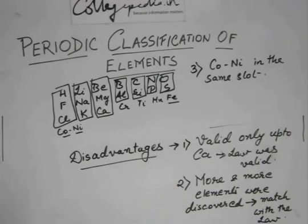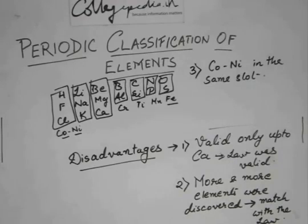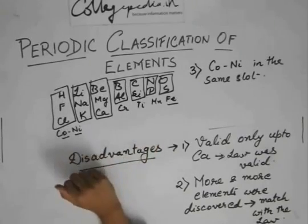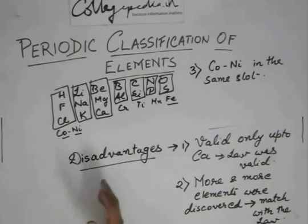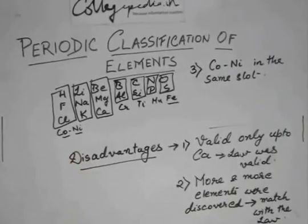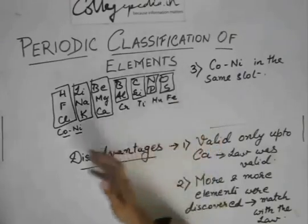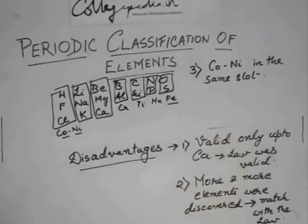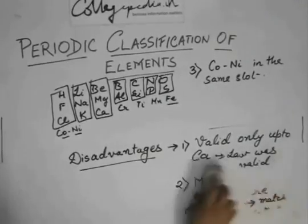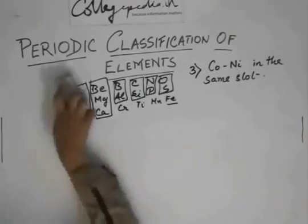So there are three main disadvantages. One was that it was valid only till calcium. And the second was that as more and more elements were discovered, they did not match with Newland's law of octaves. And the third disadvantage was that copper and nickel were placed in the same slot - and there are other examples also - they were placed in the same slot, but they did not match with the other group members, rather the metal or the element with whom the properties of these elements match were placed far away from them. So Newland could not actually try to make a perfect periodic table, but it was another very good attempt to make the periodic table.